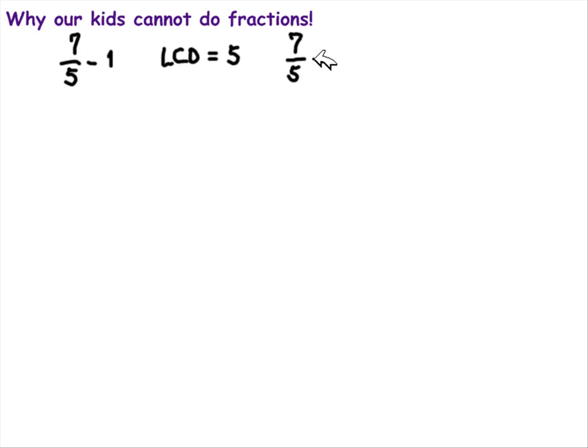They said, 7 over 5 minus 1. I said, okay, now put the least common denominator in. They make a 5 on the bottom and proceeded to write this, and 6 over 5 was the answer.